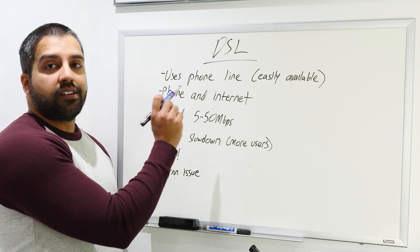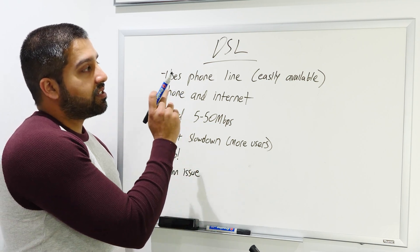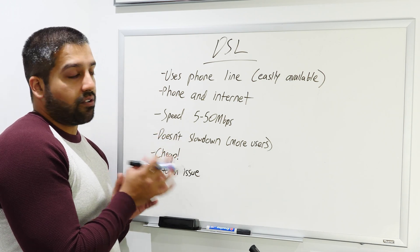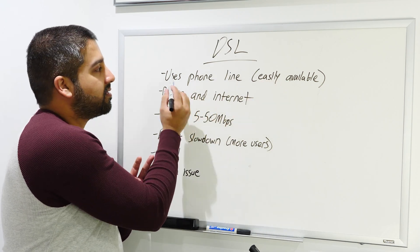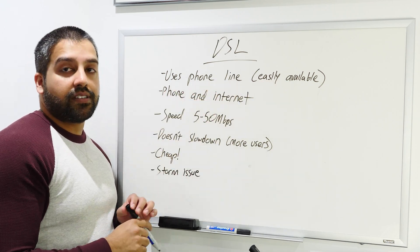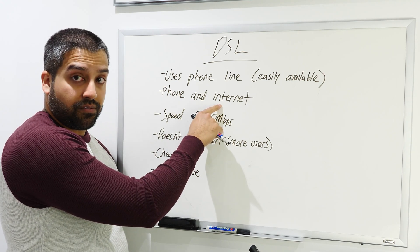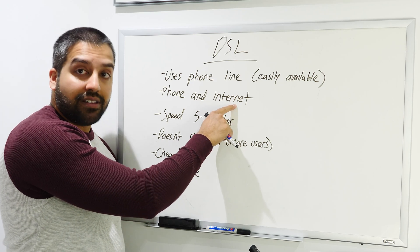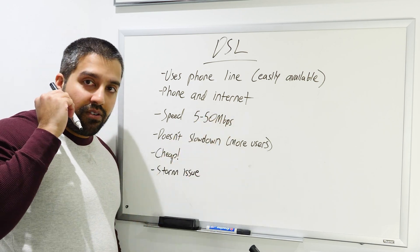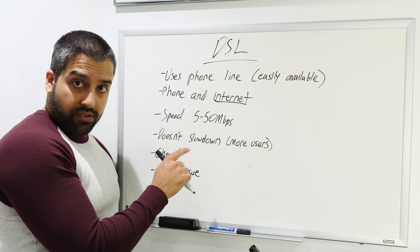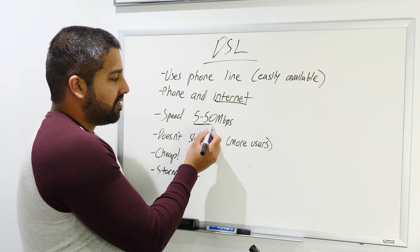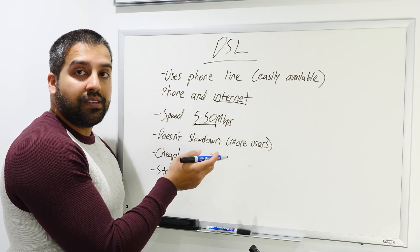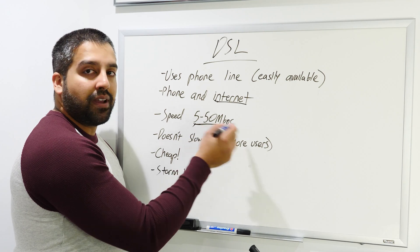Now switching over to DSL internet. It was incredibly popular in the early 2000s, just as popular as cable internet back then, and for good reason because it was easily available. It uses your existing home phone line just like 56K dial-up. Another reason for explaining 56K dial-up is because you can use your phone and internet at the same time with DSL. If you're using DSL internet and someone picks up your home phone line, you'll still be connected to the internet. Speed ranges from 5 to 50 megabits per second.